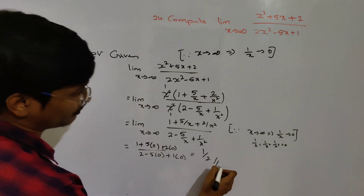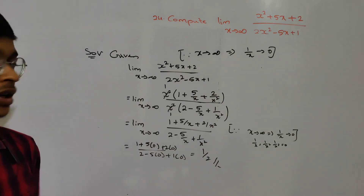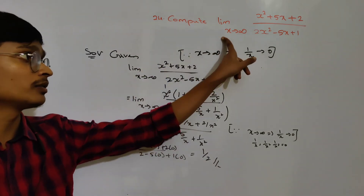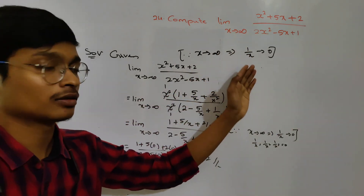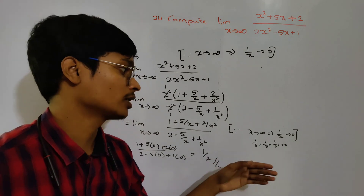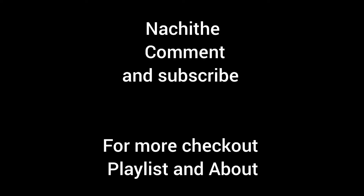Applying the rule that x tends to infinity implies 1 by x tends to 0, and 1 by x squared equals 0, we cancel the terms. The result simplifies to 1 by 2.